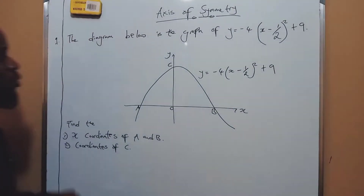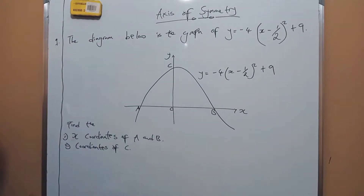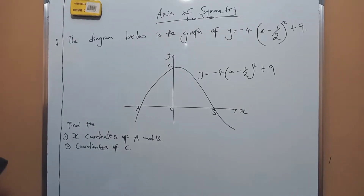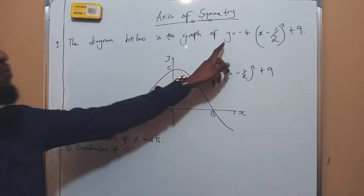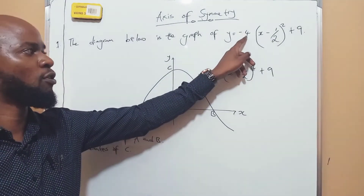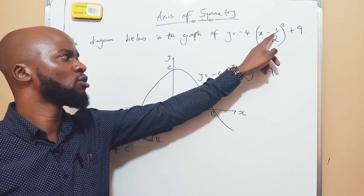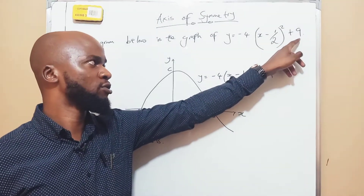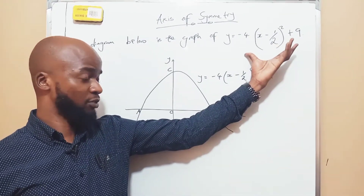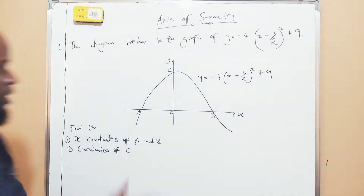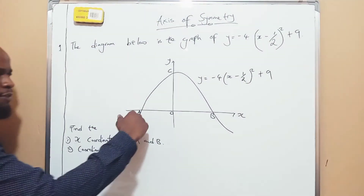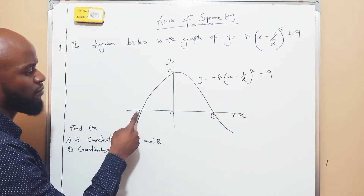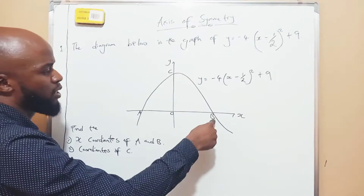We're looking at the axis of symmetry — it's the new syllabus topic. So let's look at the 2020 question. The diagram below is the graph of y equals negative 4 times (x minus 1 over 2) squared plus 9. You see that? So this is the equation — something new. And this is the diagram they gave us. You have your curve and you have your equation here. You have points a, c, and b.